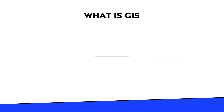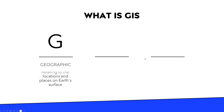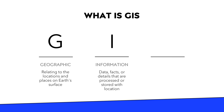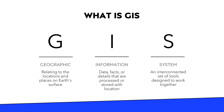I'll tell you how I like to think of GIS. I like to split it out. The G stands for geographic — that's relating to the locations and places on the Earth's surface. We have information, which might be data, facts, details, or contextual bits that are processed or stored with the location. The geographic part and the information part are coexisting peacefully together in what's called a system — an interconnected set of tools and methodologies designed to work together.